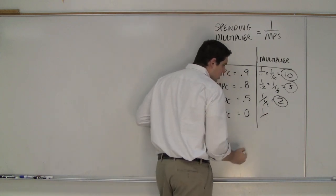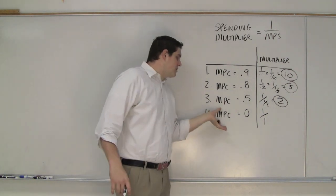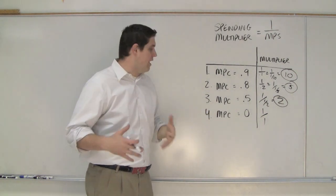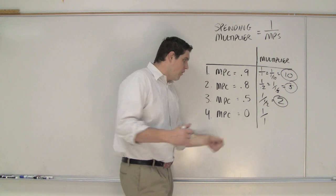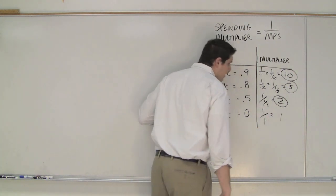And for this last one, it's 1 over 1, because if the marginal propensity to consume is nothing, that means people save all of their income. And so that's 1 over 1. Grand total is 1.